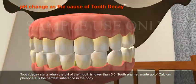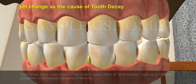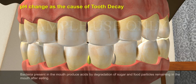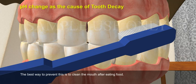Tooth decay starts when the pH of the mouth is lower than 5.5. Tooth enamel, made up of calcium phosphate, is the hardest substance in the body. It does not dissolve in water, but is corroded when the pH in the mouth is below 5.5. Bacteria present in the mouth produce acids by degradation of sugar and food particles remaining in the mouth after eating.